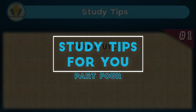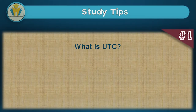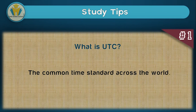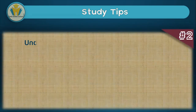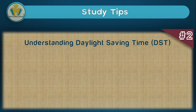Now let's look at some study tips. At the beginning of this lesson we talked about coordinated universal time or UTC. Coordinated universal time is the common standard across the world — the time used as the standard time. It might be mistaken for GMT because Greenwich Meridian Time is exactly the same as coordinated universal time. However, Greenwich Meridian Time is a time zone, while coordinated universal time is just the standard used as a reference.